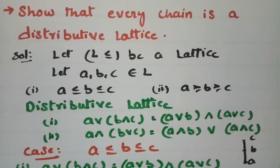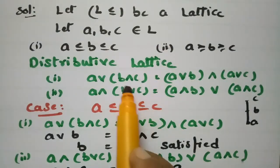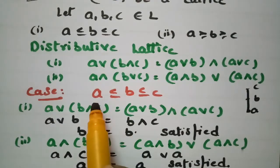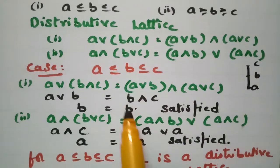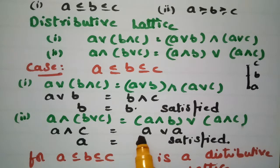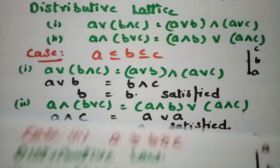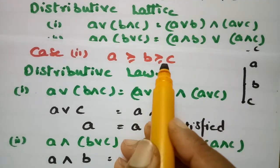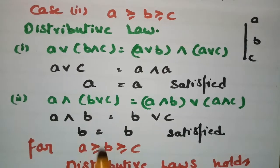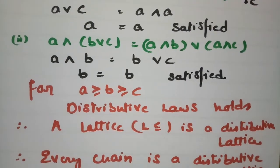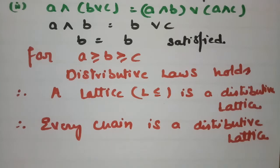The definition of a chain is simple. For the two cases of the chain, we verify that both properties of the distributive law hold. Using the Hasse diagram for each case — A ≤ B ≤ C and A ≥ B ≥ C — we confirmed both distributive properties. Therefore, every chain is a distributive lattice.